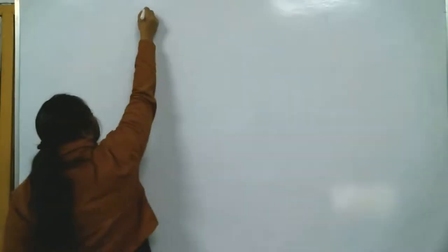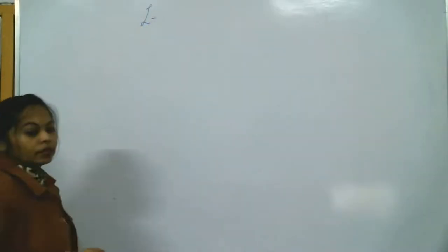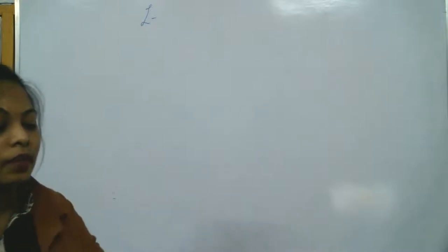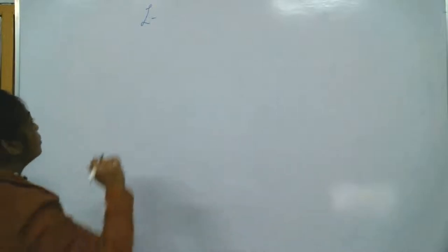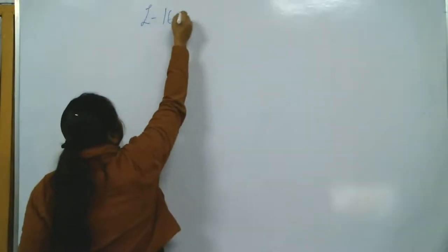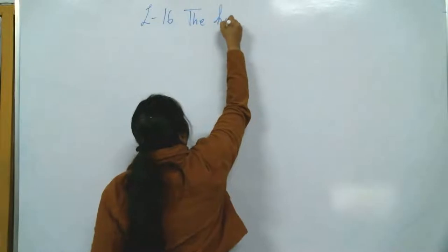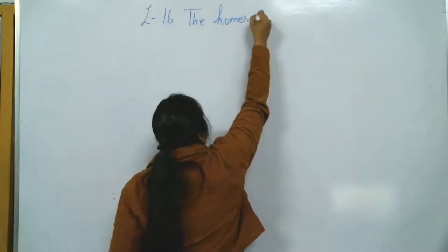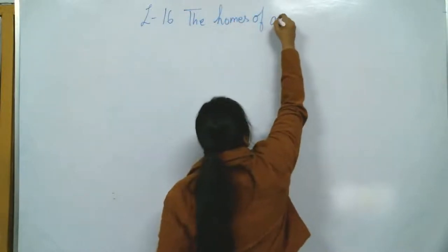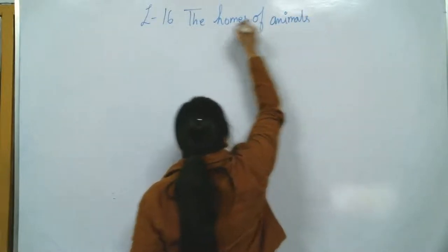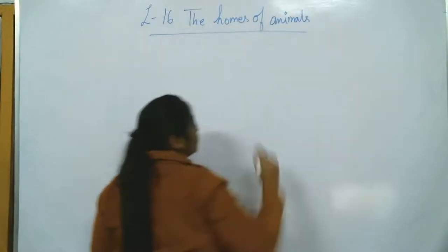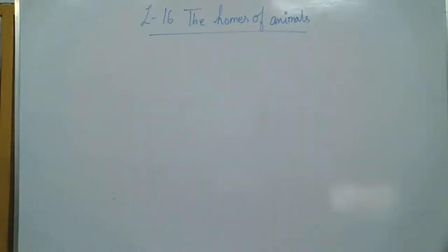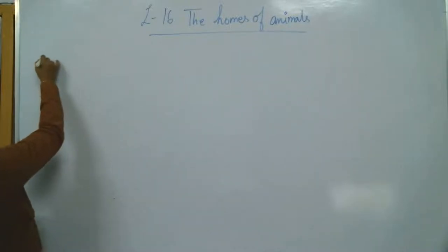Write down the name of the lesson. The lesson number is 16: The Homes of Animals. Write down the heading — The Homes of Animals — and write down today's date.